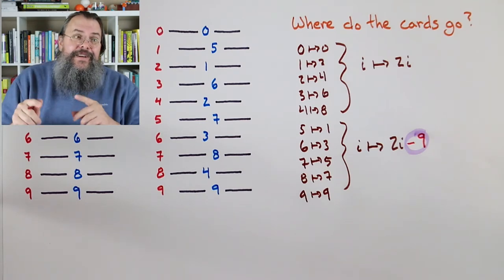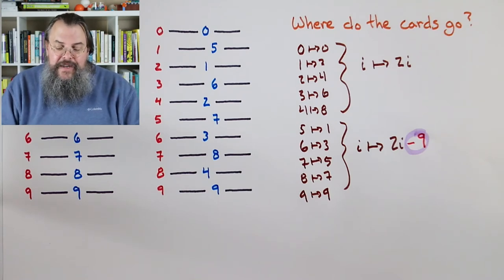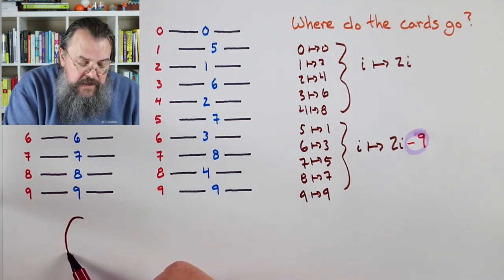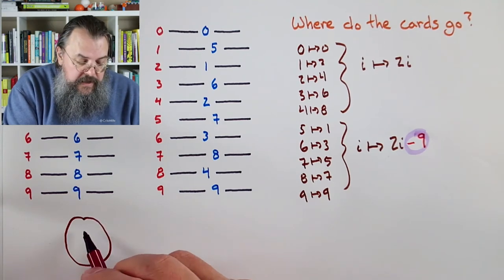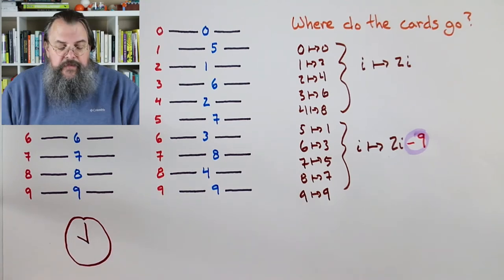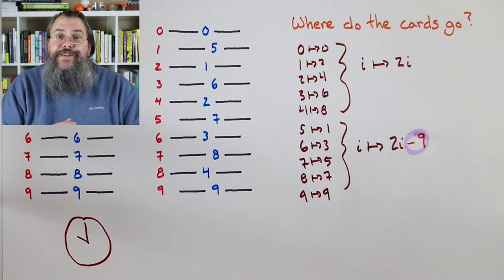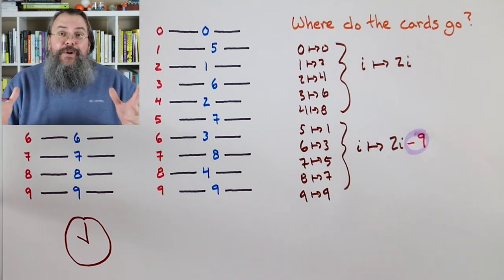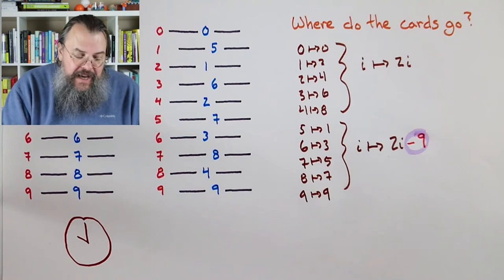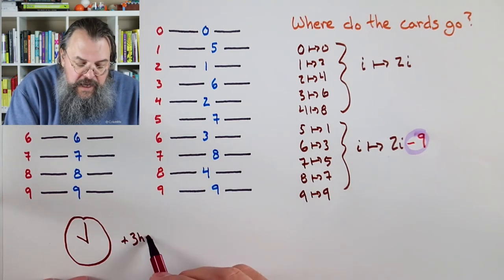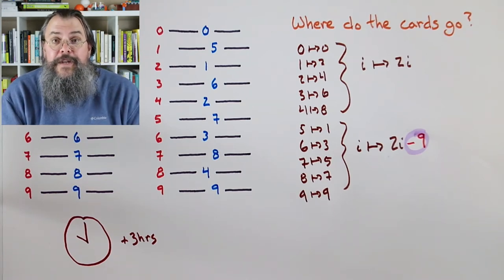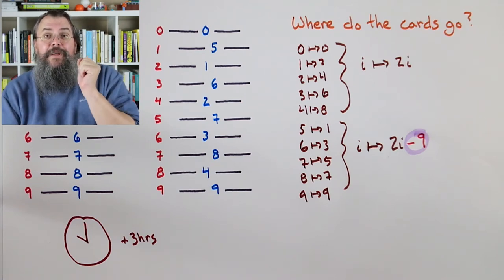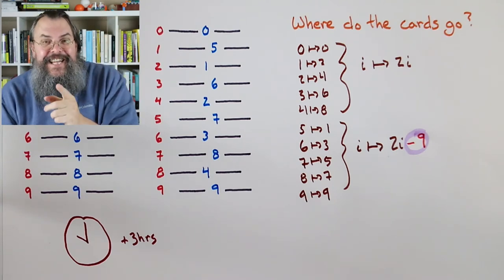We see this, we say there's a pattern here. I can tell you where the cards are going. 0 to 0, 1 to 2, 2 to 4, 3 to 6, 4 to 8. What's happening? We're doubling. We times it by 2. So what's happening here is if I have a card in position i, it's going to end up going to 2 times i. Perfect. Beautiful. But wait a second, we're not done. We just talked about the top half.